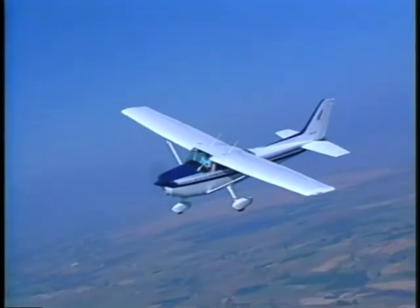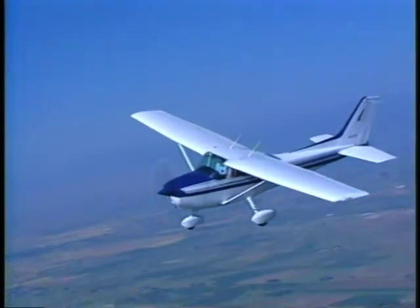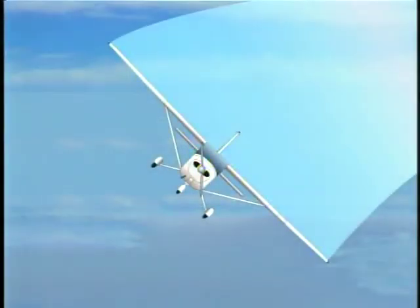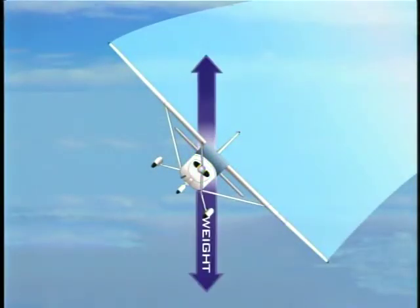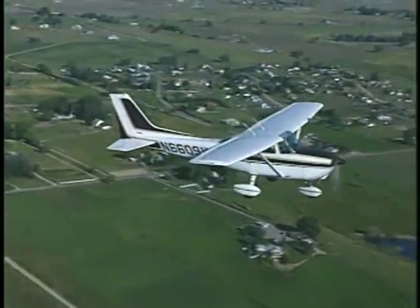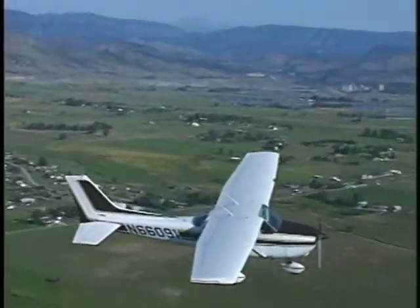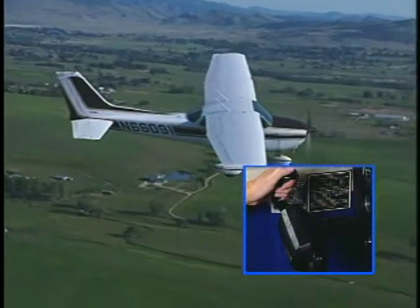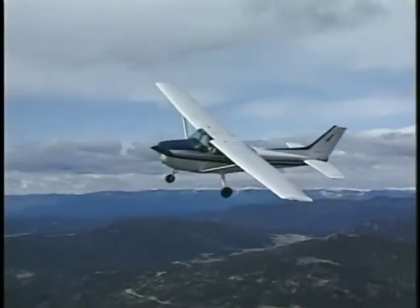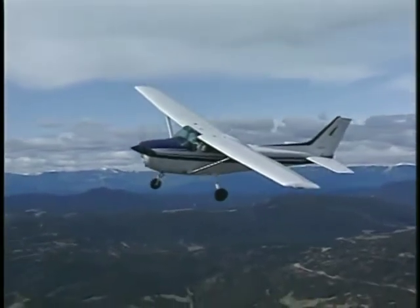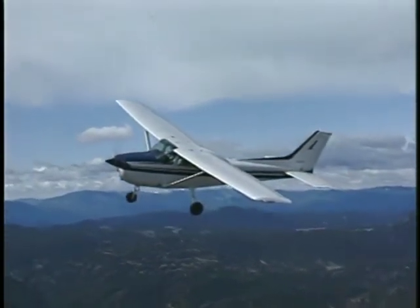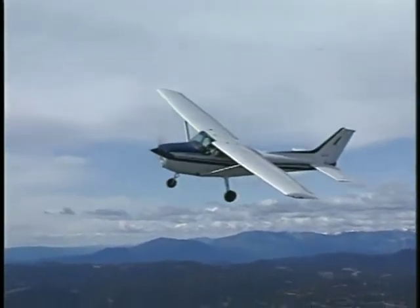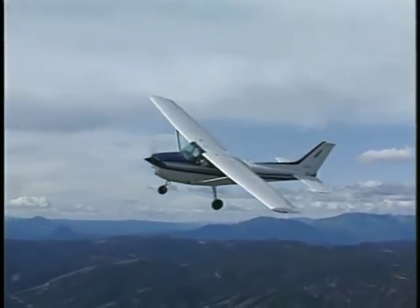Turning flight introduces new concepts with respect to the aerodynamic forces acting on the airplane. In a bank, total lift is divided into two components — one acts vertically to oppose weight and the other acts horizontally to move the airplane in the direction of the turn. Since the vertical component of lift is reduced in a turn, to maintain altitude you must apply back pressure on the yoke to increase the angle of attack until the vertical components of lift and weight are again equal. The horizontal component of lift creates centripetal force, which acts toward the center of rotation, working to oppose inertia — the tendency of the airplane to continue in a straight line.